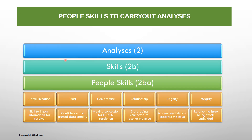People skills to carry out analysis are constituted as six segments: communication — to impart information for resolve; trust — confidence and trust in data quality; compromise — making concessions for dispute resolution; relationship — being connected to resolve the issue; dignity — manner and style to address issues with precision; integrity — resolve the issues being whole and undivided. These six segments constitute people skills needed to perform a complete analysis for the optimization process.